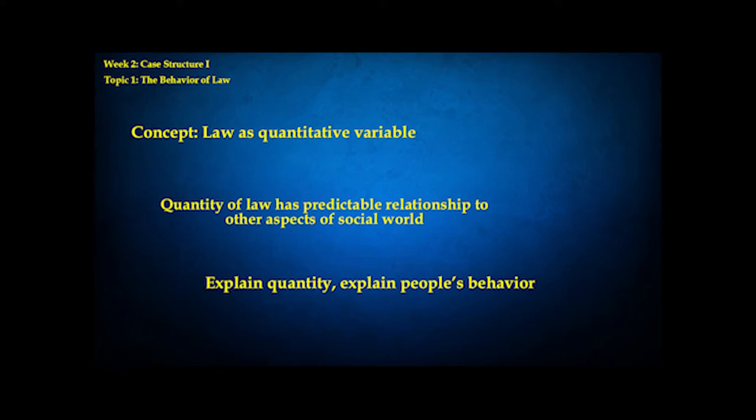The quantity of law for him is the amount of governmental social control that a case attracts. Law is governmental social control — social control being any process of defining and responding to deviance. If it's done by or involving a government, it's law. And the more governmental social control a case attracts, the more law there is, meaning the more legal authority is poured into the case.